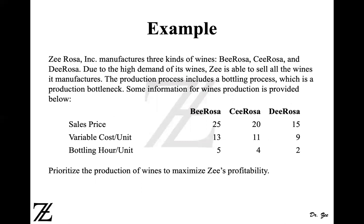Let's go with an example. C Rosa Incorporated manufactures three kinds of wines: B Rosa, C Rosa, and D Rosa. Due to the high demand for its wines, Z is able to sell all the wines it manufactures. The production process includes a bottling process, which is the production bottleneck. Some information for wine production is provided below.